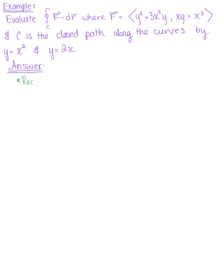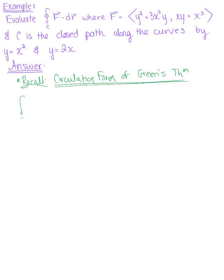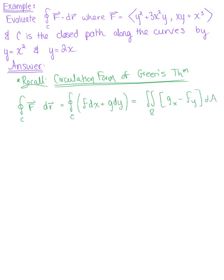To get started, let's recall the circulation form of Green's theorem. Green's theorem provides a way to convert a vector line integral — also written as the line integral over the closed curve C of component F DX plus component G DY — into a double integral over region R of the curl of our vector field, which is the partial derivative of G with respect to X minus the partial derivative of F with respect to Y, DA.